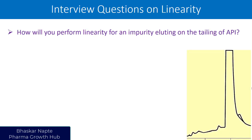The first question is: how will you perform linearity for an impurity eluting on the tailing of an API? Look at the chromatogram — the API peak is quite broad, and your impurity is just eluting on the tailing of the API. The question is, how are you going to perform linearity for that particular impurity? You might think: just make solutions at five different concentrations of the impurity and understand its response. But the real challenge is that in real life, your impurity alone will not be present in the chromatogram.